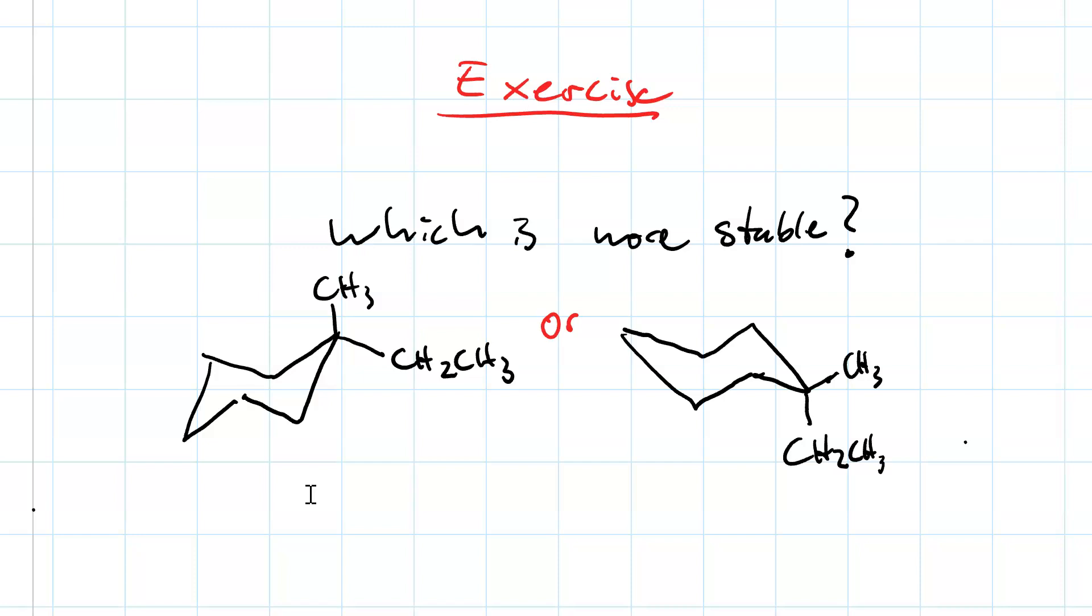So, the answer is the one that has the less bulky axial group is more stable. So, methyl axial versus ethyl axial. And clearly, ethyl is more bulky because it contains more atoms. So, it's more stable to have the methyl axial.